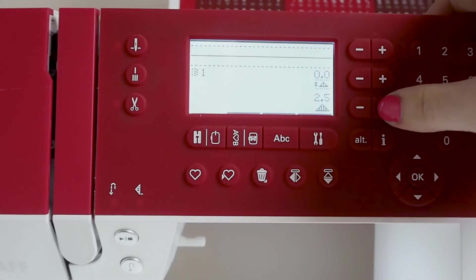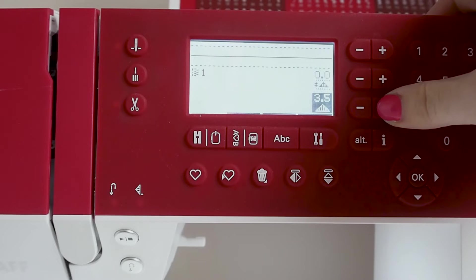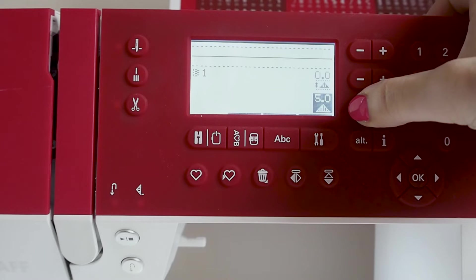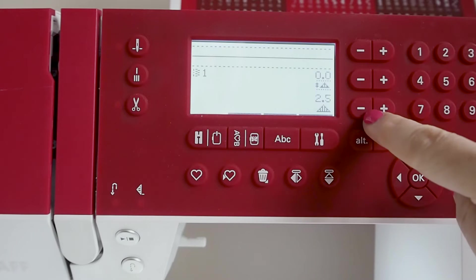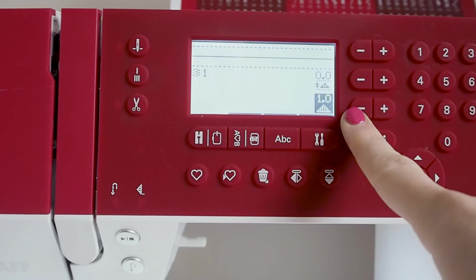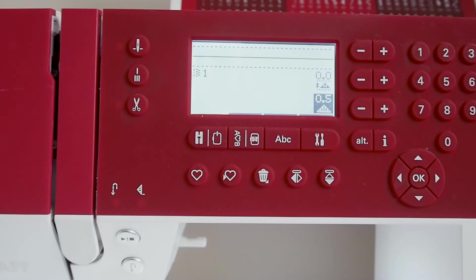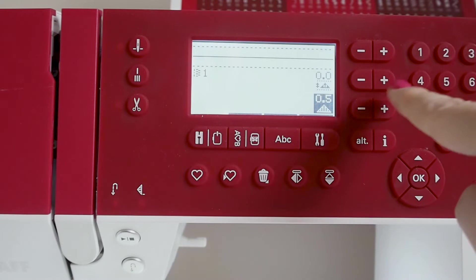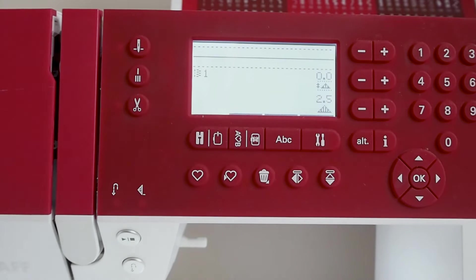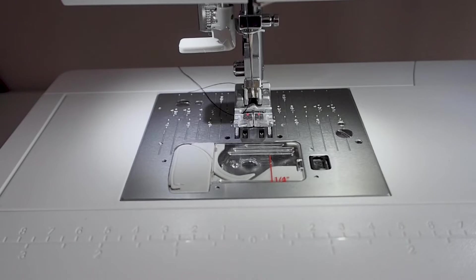Before you begin at your machine, you need to find out how to reduce your stitch length. Mine is via these up and down buttons here. You can see it goes from 0.5 up to 5 with 2.5 being the regular standard stitch length. Don't worry if you don't have this range, you just need to be able to reduce the stitch length down to your smallest option. We will begin at the standard regular stitch length.